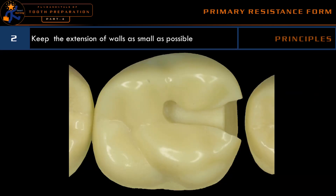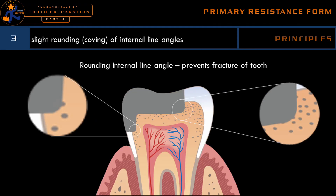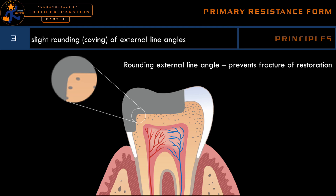The second principle essential to provide primary resistance form is to make the preparation as conservative as possible, thus protecting the cusps and the sound tooth structure, minimizing the extension so that the tooth will not fracture. The third principle employed is the rounding or caving of the internal line angles. There are two types of line angles: internal and external. Rounding the internal line angles prevents fracture of the tooth by disrupting the stress concentration points. Rounding the external line angles prevents fracture of the restoration.